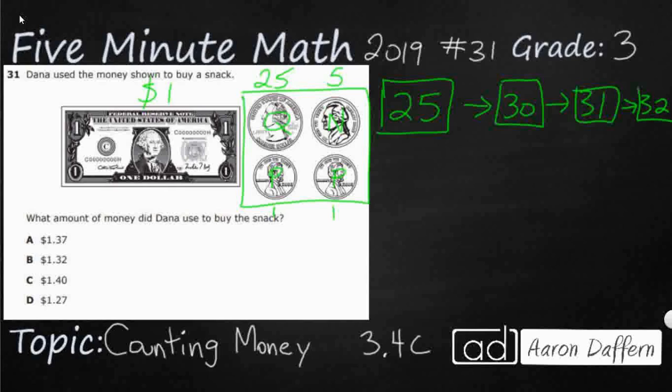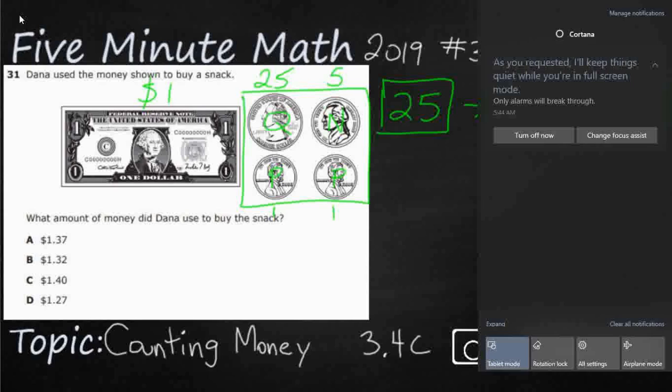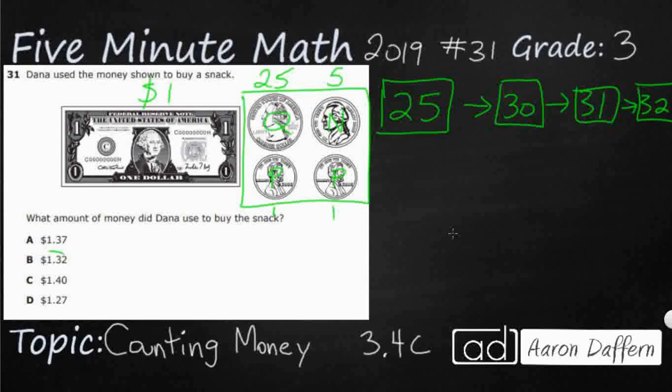So 25, 30, 31, and 32. So our answer here is going to be $1.32. That's pretty simple. But let's see how they get each of these incorrect answers.